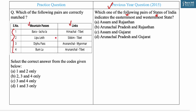You have to identify which pairs are correctly matched. Baralacha La is a high mountain pass in the Zanskar Range connecting Lahaul district in Himachal Pradesh to Leh district in Ladakh — so this pair is not correctly matched as given. Lipu Lekh is a Himalayan pass on the border between India's Uttarakhand state and Tibet, situated near the tri-junction of Nepal, Tibet and India — also not correctly matched. Diphu Pass is a mountain pass at the disputed tri-point border of India, China and Myanmar, and lies on the McMahon Line — this pair is correctly matched.